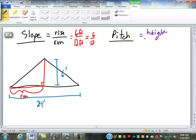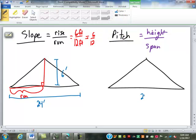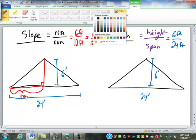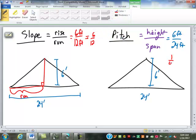Pitch is height over span. So, for the same situation here, 24 foot span, 6 feet of height. We still have 6 feet of height, but our span is 24 feet. That reduces to a one-fourth pitch.